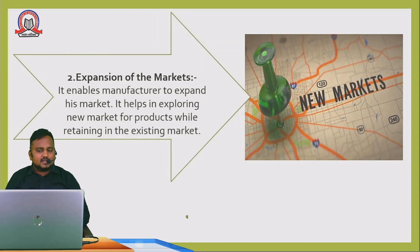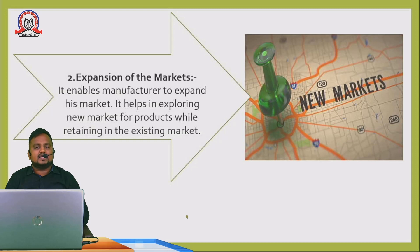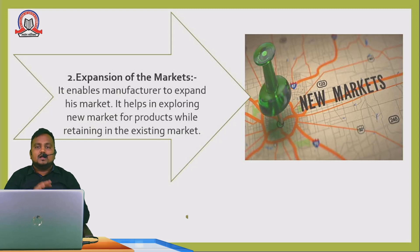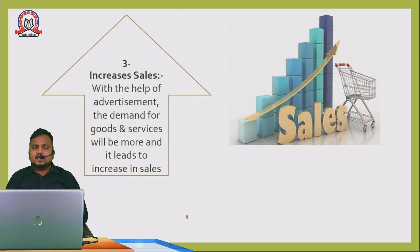The next point is expansion of the market. This means a manufacturer can expand from one area to another. For example, you may have seen tea chains that were in one place earlier but are now slowly expanding everywhere. Expansion of the market enables the manufacturer to extend their market area and explore new markets for a product while retaining the existing market. The existing market continues, and a new area is added for sales.